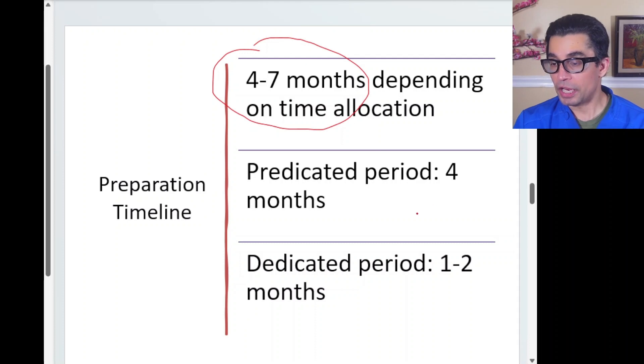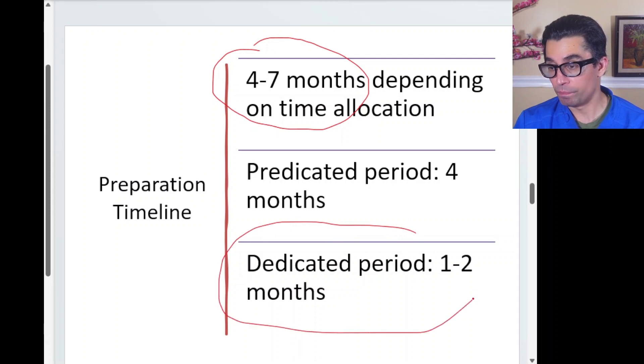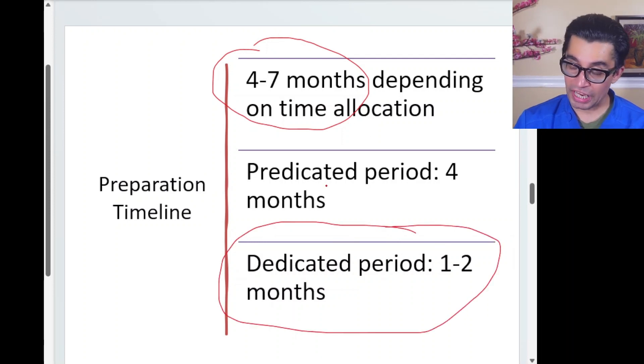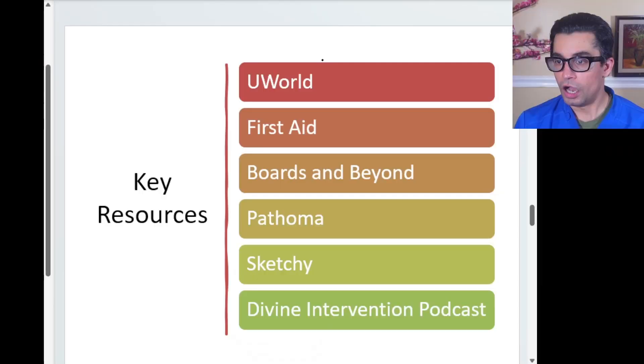Preparation time is four to seven months depending on your basic sciences foundation. I recommend having at least one to two months of dedicated study time at the end. If you're preparing during medical school, use summer vacation or free time blocks, but make sure you have at least one dedicated month immediately before the exam.